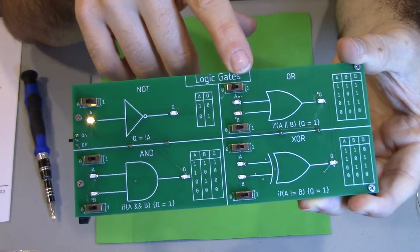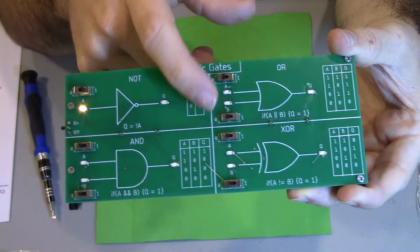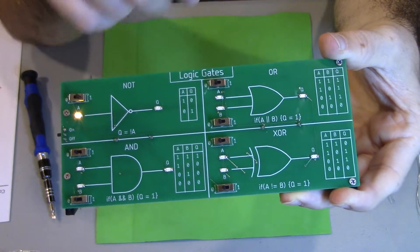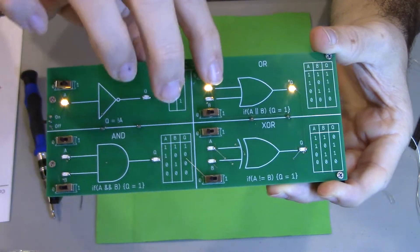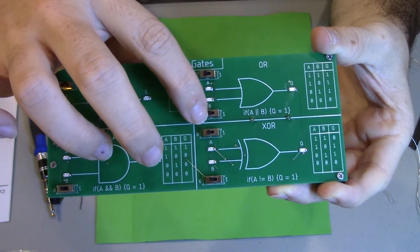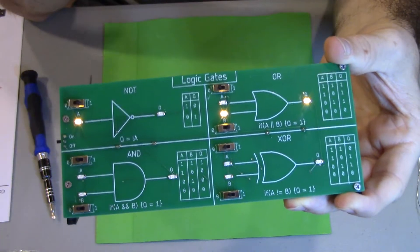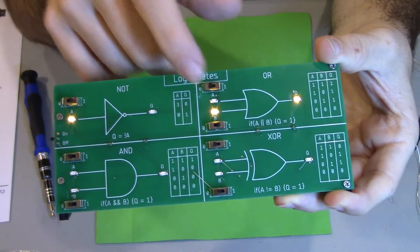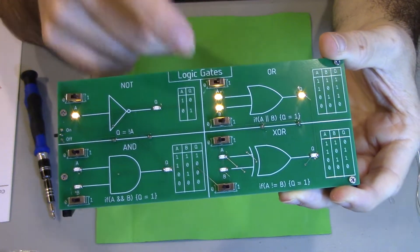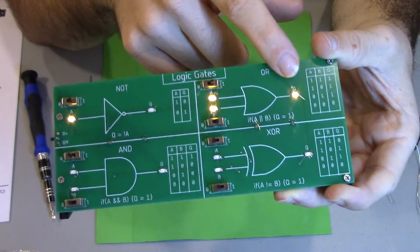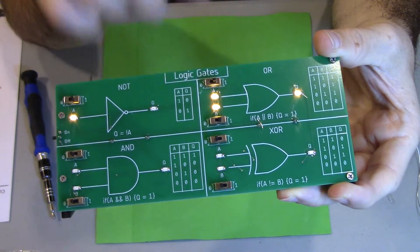Here's our OR gate. If current is passing either through A or B, we will have an output current. So let's put a current in A and see what happens. Output current. Let's put a current in B and see what happens. Output current. See what happens if we put a current through both of them. Output. Because it doesn't matter which current is going through, we're going to get an output if A or B has current passing through it.